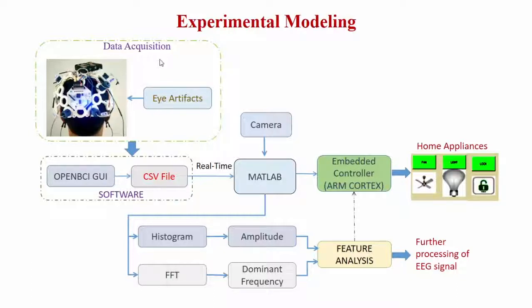In the experimental setup, the EEG signal is taken from the subject via a headset placed on the scalp. Eye artifacts are also captured by a camera, correlating eye blinks with the EEG signal spikes. Both the EEG and camera data are processed in MATLAB and fed to an ARM Cortex embedded controller for feature analysis, and then output to home appliances.